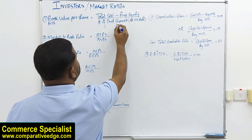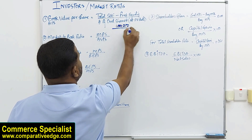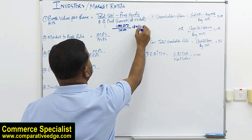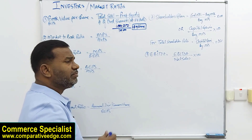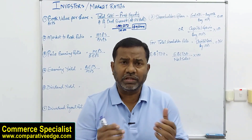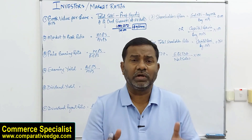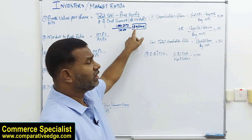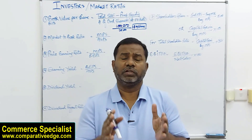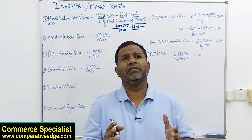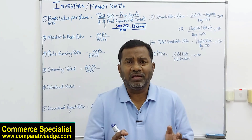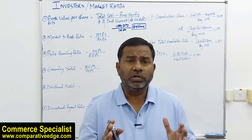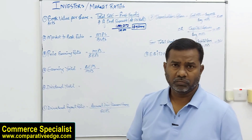For example, if total shareholders' equity is $1 million and ordinary shares are 100,000, then book value per share is $10. This means if the company is liquidated on the date of the financial statements, each shareholder receives $10 per share. This ratio is typically calculated by financial institutions for companies with mainly liquid assets, and it's also used to assess merger terms with some adjustments.